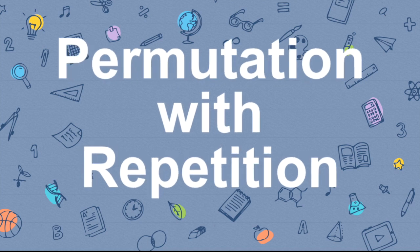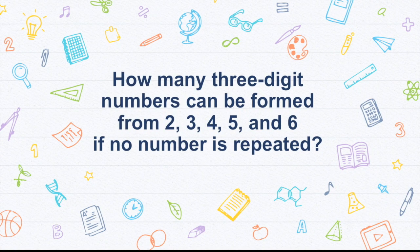Now what is permutation with repetition? So this is an example. If you can still recall, this is the first example that I gave in the last video. How many three-digit numbers can be formed from 2, 3, 4, 5, and 6 if no number is repeated?